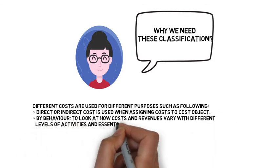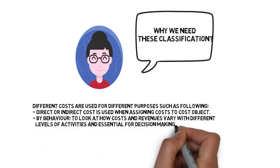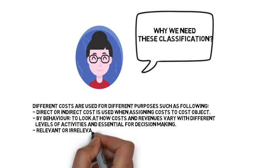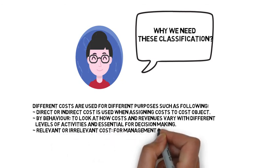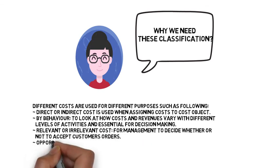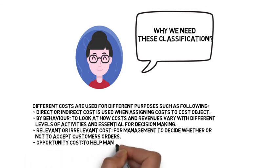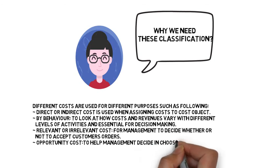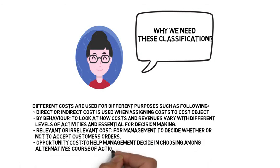For example, will it be wiser to pay the supervisor's fixed salary or according to volume produced by his or her team or combination of both? Relevant or irrelevant cost, for management to decide whether or not to accept customers' orders. Opportunity cost, to help management decide in choosing among alternatives course of action.